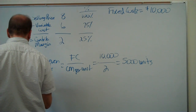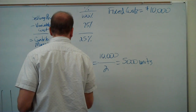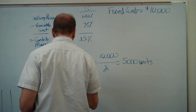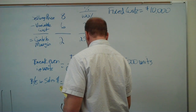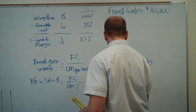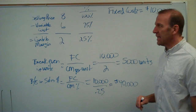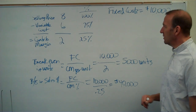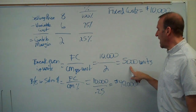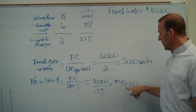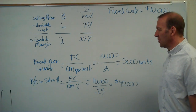To calculate break-even in sales dollars, you take fixed costs divided by your contribution margin percentage. That's $10,000 divided by 0.25, which gives us $40,000. You could also figure that out by taking your 5,000 units times the $8 sales price, which also gives you $40,000. So there are two ways to calculate break-even in sales dollars.